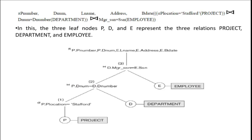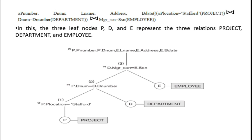For example, this query is going to project certain attributes. You are using a join operation — joining the employee table, project table, and department table — all three tables. You are selecting project number, department number, last name, address, and birth date of a particular employee whose project location is Stafford.